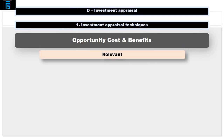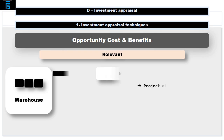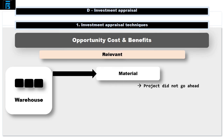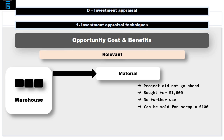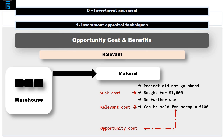Opportunity costs and benefits are also relevant. Suppose we have some material in the warehouse that we bought for a project a while ago that didn't go ahead. Suppose it cost a thousand dollars to buy, and we have no further use for this material other than for a project we're considering. If we don't go ahead with the project, we could sell the material for scrap for a hundred dollars. The thousand dollars is irrelevant, as it's a historical cost and therefore sunk. If we don't go ahead with the project, we could sell this material for a hundred dollars. So if we do go ahead, we'll be choosing to forego a hundred dollars income. In effect, using the material on the project has cost us one hundred dollars, as we're one hundred dollars worse off as a result of going ahead.